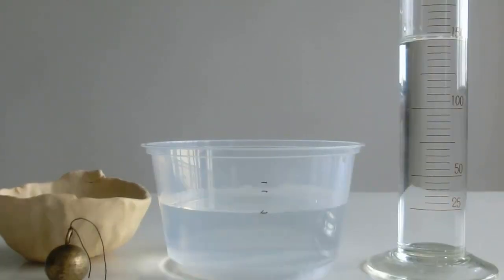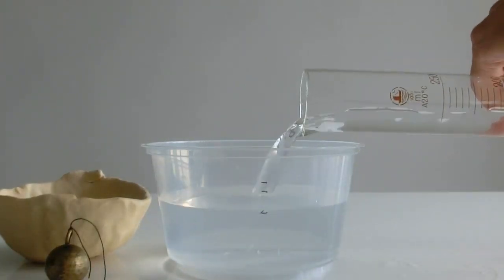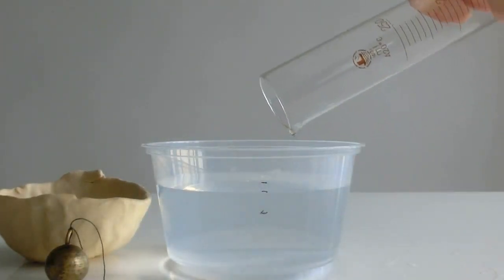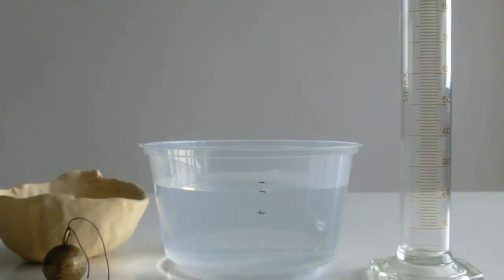Since the density of water is 1 gram per cm³, 150 cm³ of water is 150 grams of water!